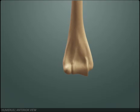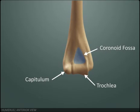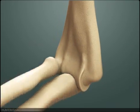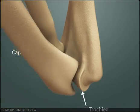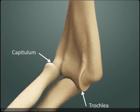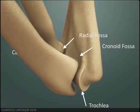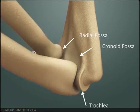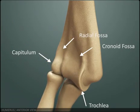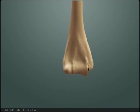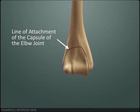Anteriorly, the lower end of the humerus consists of the capitulum, the trochlea, the coronoid fossa, and the radial fossa. Notice how the capitulum articulates with the head of the radius, the trochlea articulates with the trochlear notch of the ulna, the coronoid fossa lodges the coronoid process of the ulna, and the radial fossa lodges the head of the radius. Remember that the coronoid and radial fossae lie inside the capsule of the elbow joint, but are separated from the joint cavity by fat and synovial membrane.